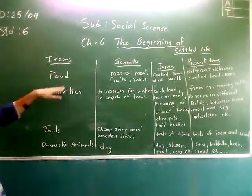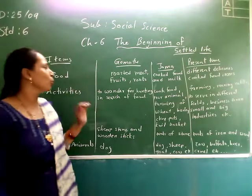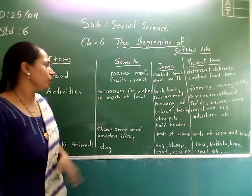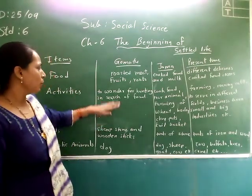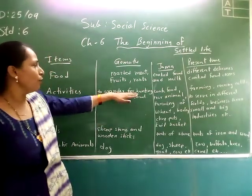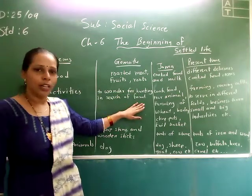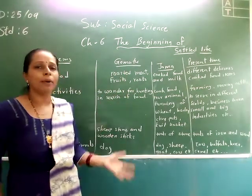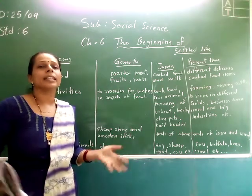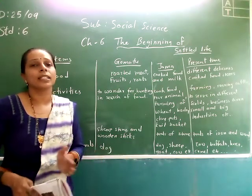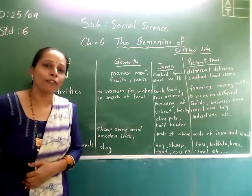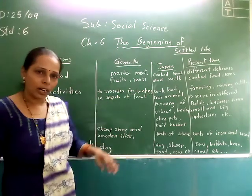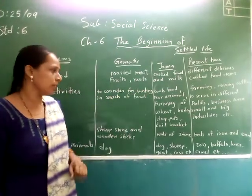And activities — the type of activities in the time of Homo 2: which type of activities did the people do? They wander for hunting in search of food. In the time of Homo 2, the people wandered here and there in search of food, and they wandered for hunting animals.